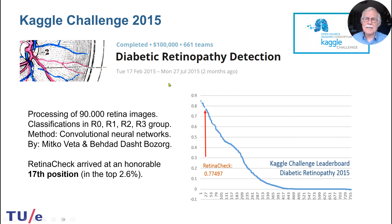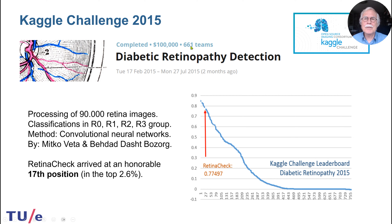Kaggle has many challenges, and in 2015 there was a diabetic retinopathy detection challenge. There were 661 teams with a prize of $100,000. We participated too and ended up in place 17, which is quite nice — that's the top 3% of all participating teams.